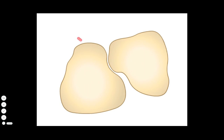Listeria species include enteric pathogens such as Listeria monocytogenes that may contaminate foods such as cheese and sauerkraut.